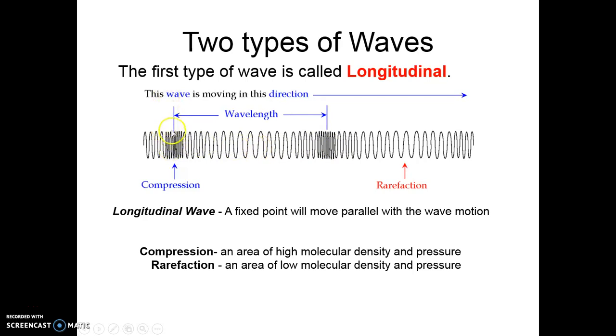So it's producing these areas of compressions, and then these areas of decompressions, which we call rarefactions. So the space between a compression and another compression, or a rarefaction and another rarefaction, is what we just consider the wavelength, so the length of one whole wave.